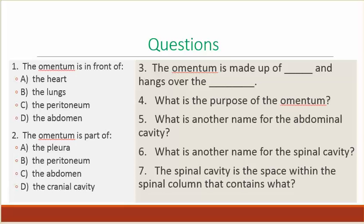Number 3. The omentum is made up of blank and hangs over the blank. Number 4. What is the purpose of the omentum? Number 5. What is another name for the abdominal cavity? Number 6. What is another name for the spinal cavity? Number 7. The spinal cavity is the space within the spinal column that contains what?